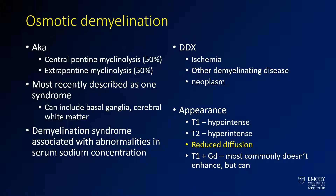We're dealing with a case of osmotic demyelination, which in a subset is known as central pontine myelinolysis — that's the old name. Now it's recognized to be extra-pontine about half the time. You can have this involving the basal ganglia, white matter, as well as the pons and brainstem. This is a demyelination syndrome tied to abnormalities in sodium concentration. Your differential includes ischemic disease, other causes of demyelination, and neoplasm.